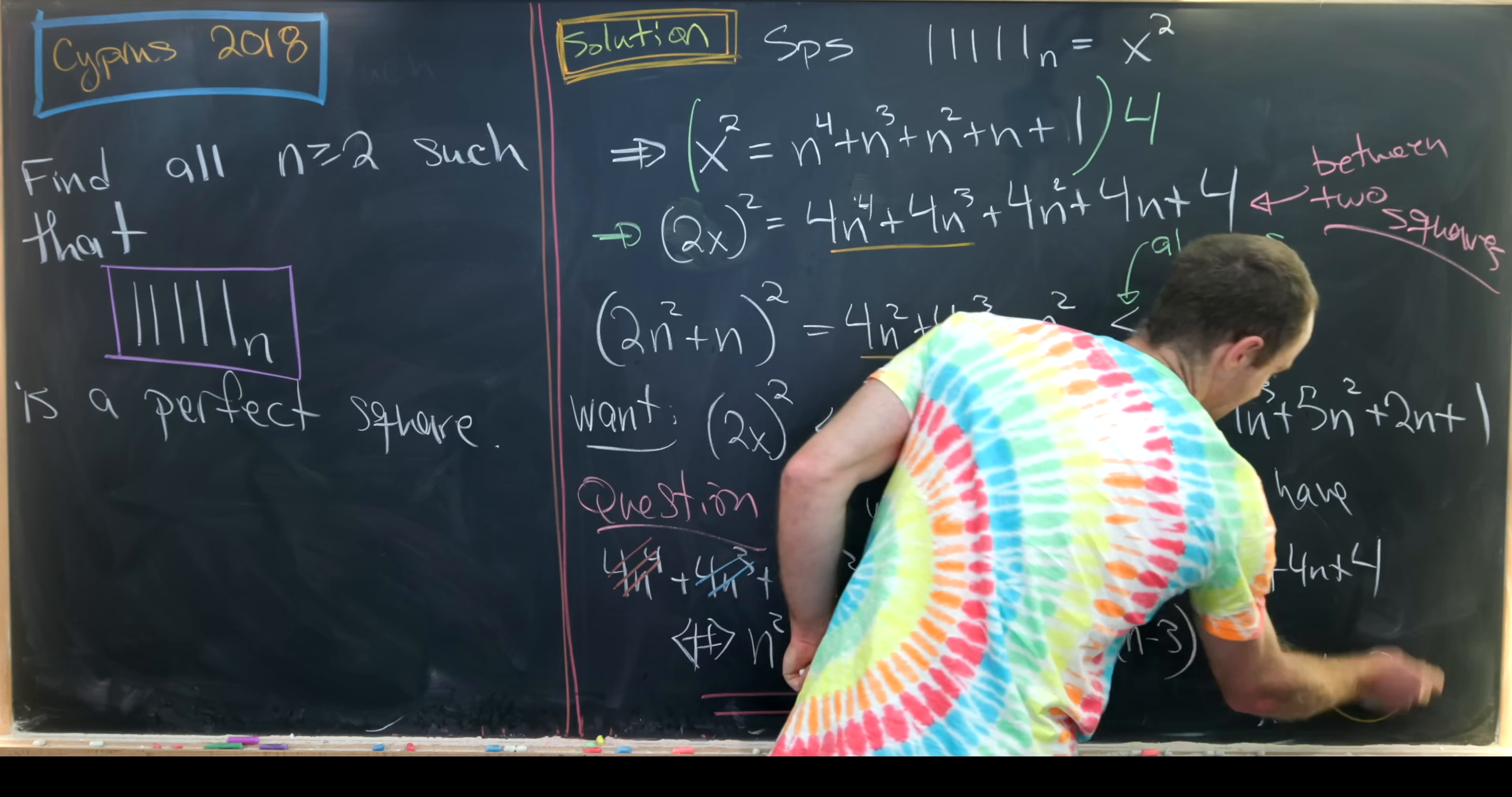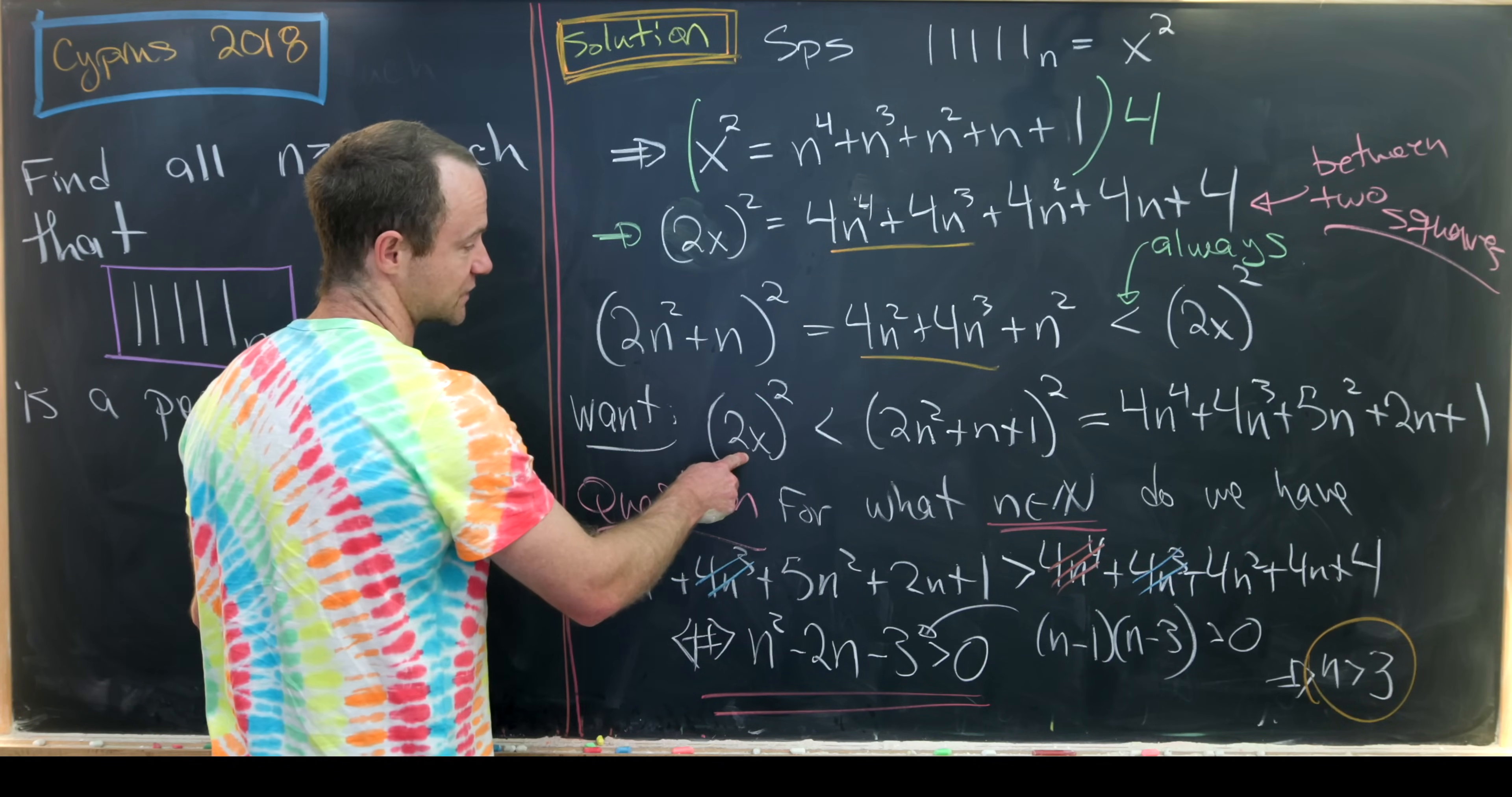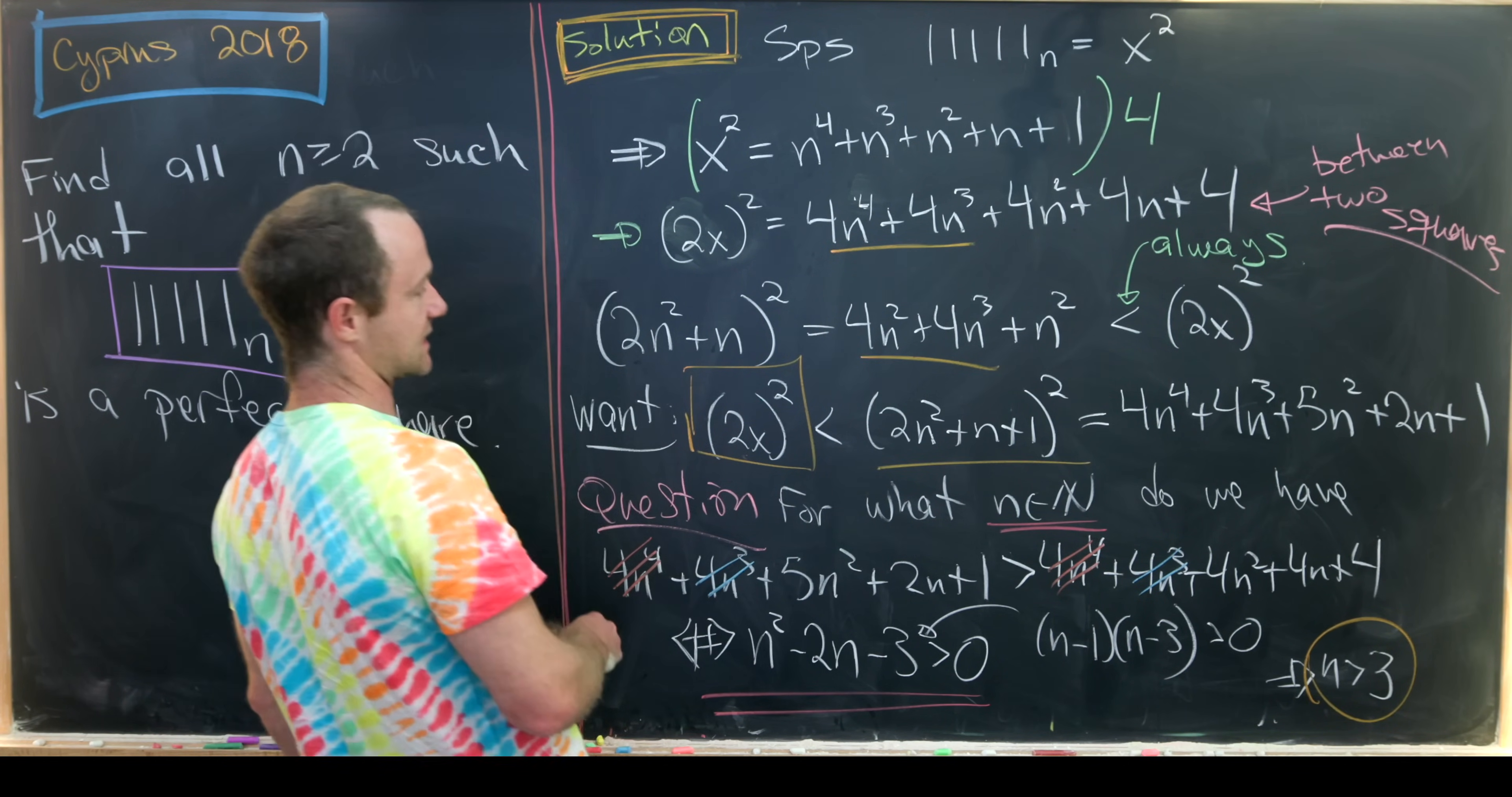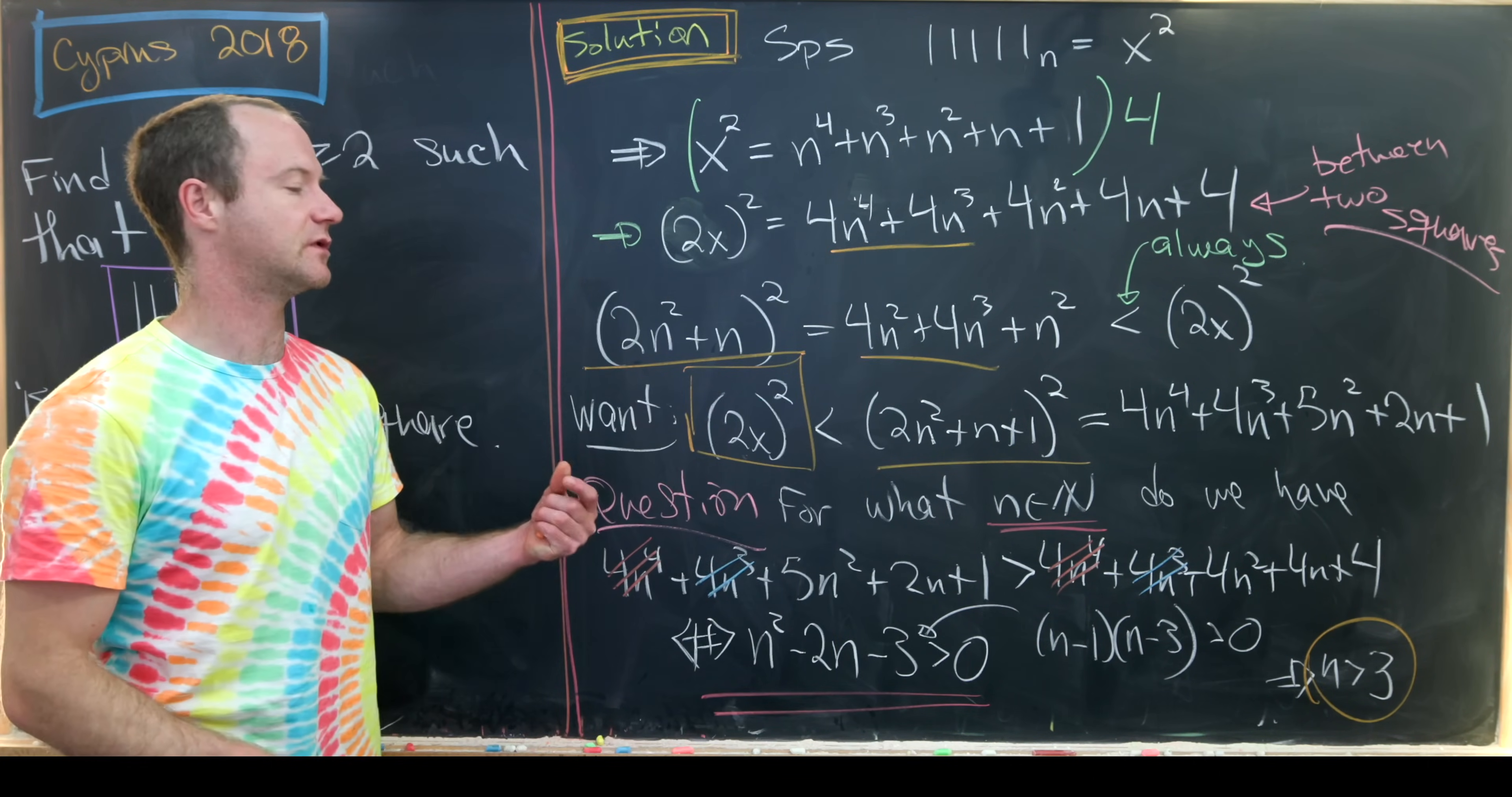And then furthermore, the only roots of this polynomial occur at 1 and 3. And so if you're to the right of 3, you'll always be bigger than 0. So that means we get down here that n is bigger than 3. So let's summarize what we've just shown. So we've just shown that our perfect square, this 2x quantity squared, is strictly less than this guy and strictly bigger than this guy when n is bigger than 3. Which tells us the only possibilities are for n to be equal to 2 or equal to 3.